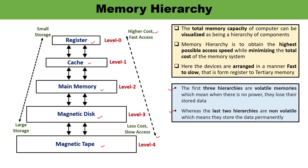Level 0 is registers, which are present inside the CPU. Since registers are inside the CPU, they have the least access time, are the most expensive, and smallest in size — generally in kilobytes — and are implemented using flip-flops. Level 1 is cache memory, used to store the parts of the program frequently accessed by the processor. Cache is expensive and smaller in size.